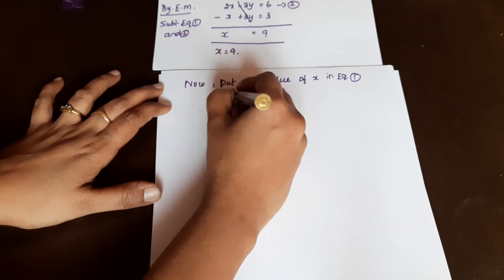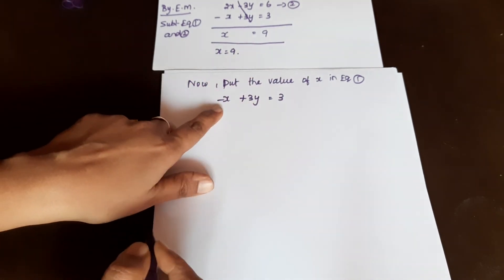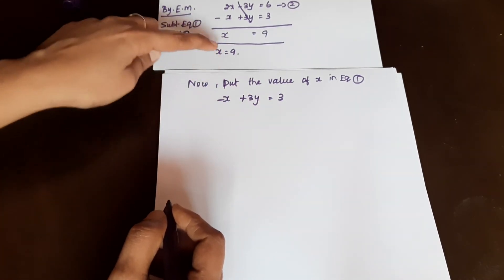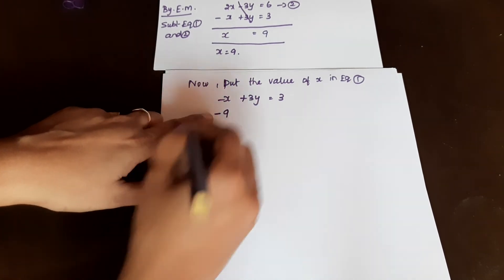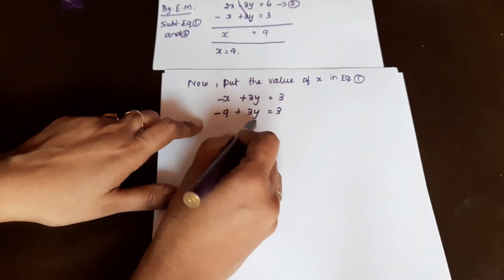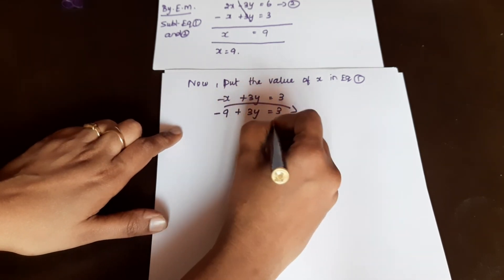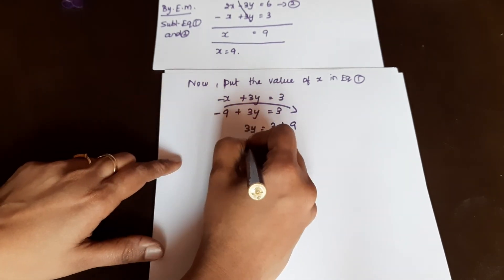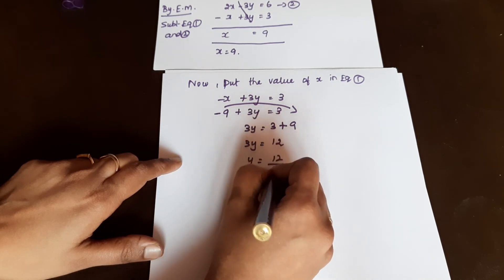Equation number 1: minus X plus 3Y equals 3. Now X is going to be 9, so minus 9 plus 3Y equals 3. Transposing minus 9: 3Y equals 3 plus 9, so 3Y equals 12.